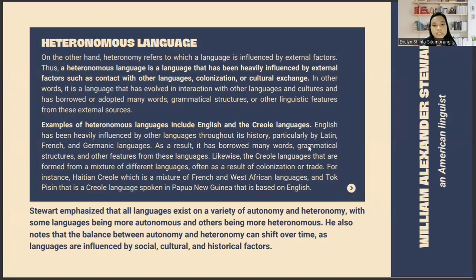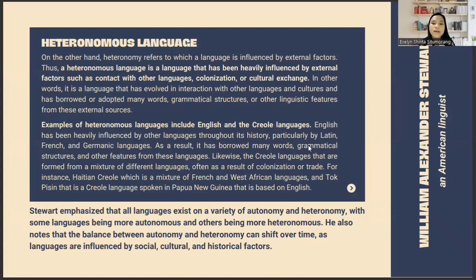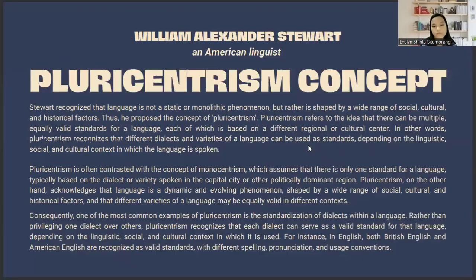Examples of heteronomous languages include English and creole languages. English has been heavily influenced by other languages throughout its history, particularly by Latin, French, and Germanic languages, and as a result has borrowed many words, grammatical structures, and other features from these languages. Stewart emphasized that all languages exist on a spectrum of autonomy and heteronomy, with some languages being more autonomous and others more heteronomous. He also notes that the balance between autonomy and heteronomy can shift over time as languages are influenced by social, cultural, and historical factors.